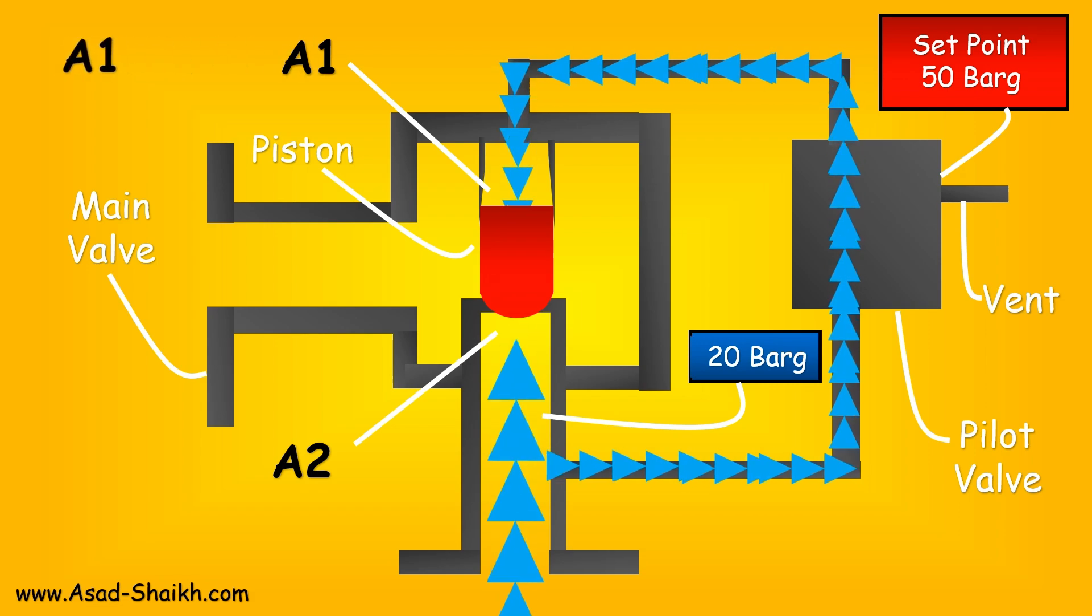This inlet pressure of 20 bar is also reaching from the pilot to the other side of the piston, and the area A1 is greater than the area A2. This is very important to note, and this is how all relief valves, especially pilot relief valves, are made.